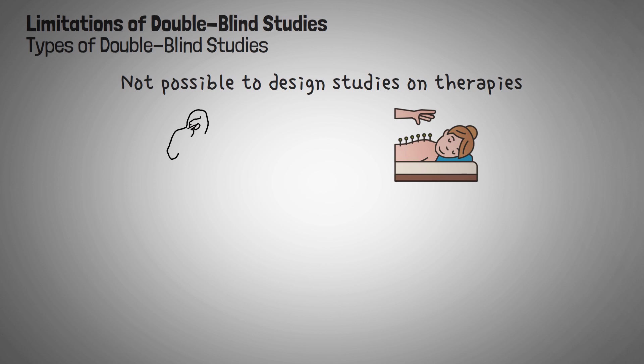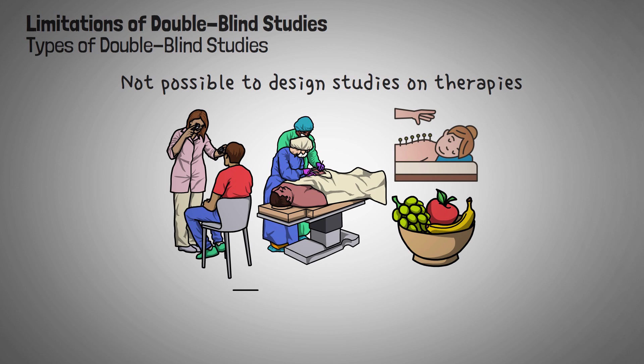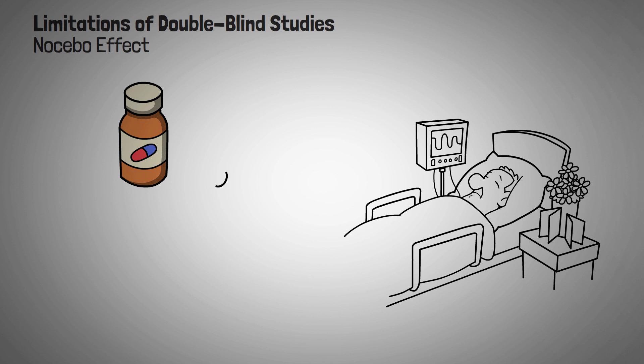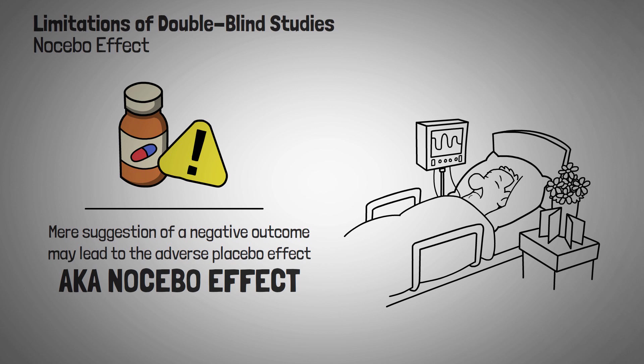Another limitation is the types of double-blind studies. Double-blinding is not feasible for all types of trials. For instance, it's not possible to design studies on therapies such as acupuncture, physical therapy, diets, or surgery in a double-blind manner. In these cases, researchers and participants just can't be unaware of who is receiving the therapy. Another limitation is the nocebo effect. Now participants in clinical trials must be informed of the possible side effects that may result in an experimental treatment. However, the mere suggestion of a negative outcome may lead to a negative placebo effect, also known as the nocebo effect. It can result in participant dropouts and the need for additional medications to treat the side effects.